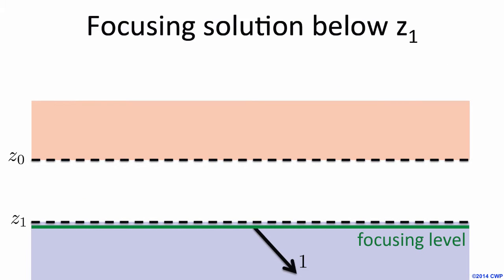Now let's talk about the famous focusing solutions. Focusing solutions are solutions of my system that satisfy a specific boundary condition. You define a focusing level, which can be any level in the medium — think of it like your redatuming level, to which you might want to redatum your waves. You replace the medium below the focusing level by a homogeneous medium, and then the focusing solution is a solution of this system that has only one down-going wave below the focusing level. Nothing else.